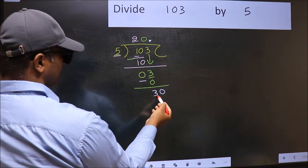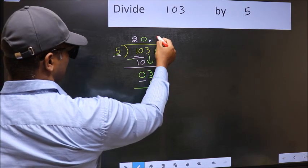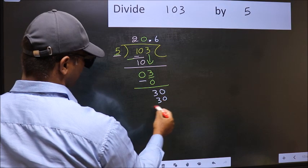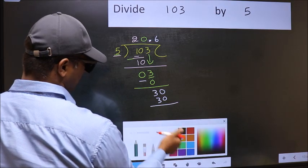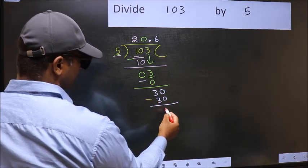So now you can put dot and take 0. So 30. When do we get 30 in 5 table? 5 times 6, 30. Now you should subtract. 30 minus 30, 0.